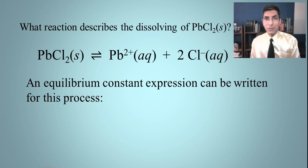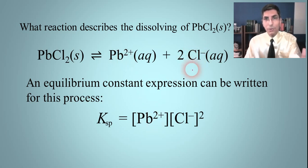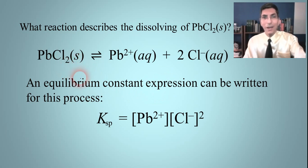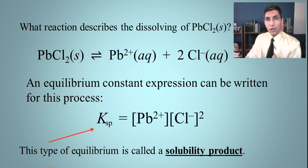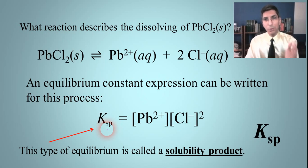We always leave out pure liquids and pure solids, and we do have a solid to leave out. So the equilibrium constant expression is the concentration of lead ions times the concentration of chloride ions squared — that squared comes from the coefficient of two. There are no reactants to put into this expression because lead(II) chloride is a solid. This equilibrium constant is in moles per liter. Specifically, we're talking about the solubility of this compound, so it's called the solubility product — Ksp.